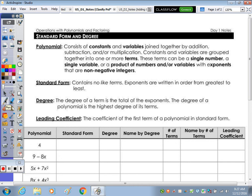So a polynomial consists of constants and variables joined together by addition, subtraction, and or multiplication. Constants and variables are grouped together into one or more terms. These terms can be a single number, a single variable, or a product of numbers and or variables with exponents that are non-negative integers. So some of those key words are in bold.